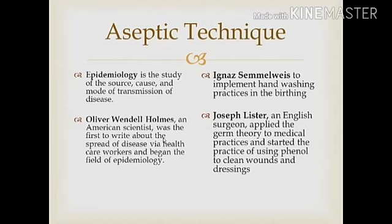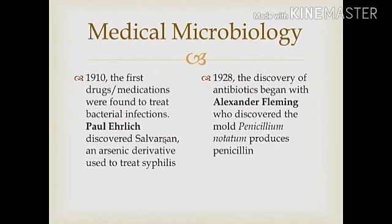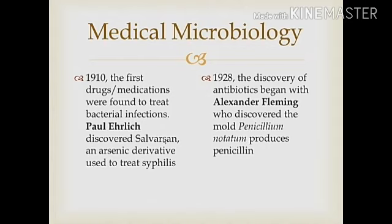Despite the advances being made in microbiology and the relationship between microbes and disease, it wasn't until the early 1900s that methods were developed to help patients infected with microbial diseases. Two significant events in medical microbiology need to be noted. First was in 1910 and the discovery of Salvarsan, which is an arsenic derivative. Paul Ehrlich discovered Salvarsan and used it to help treat patients who had syphilis. The second is in 1928 when Alexander Fleming discovered penicillin while working with the fungus Penicillium notatum. This led to the development of antibiotics.